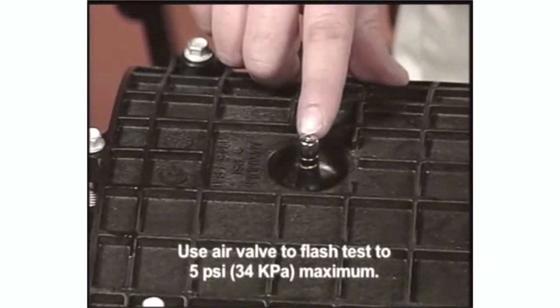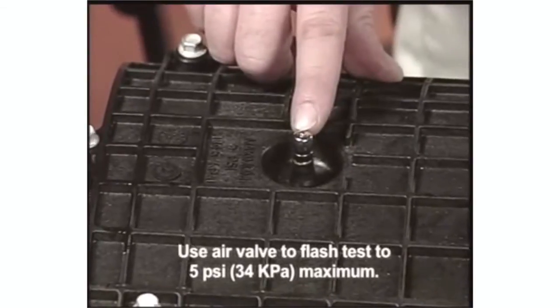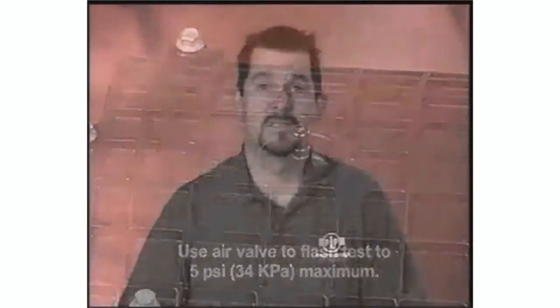Use the air valve to flash test the closure to 5 psi maximum for your accepted company practice. Flash testing is the procedure that we highly recommend to ensure that you've assembled and sealed the closure properly before you leave the job site. Many companies have their own procedures for flash testing, so follow your company practices. But this is just one alternative way to flash test to achieve the same result.